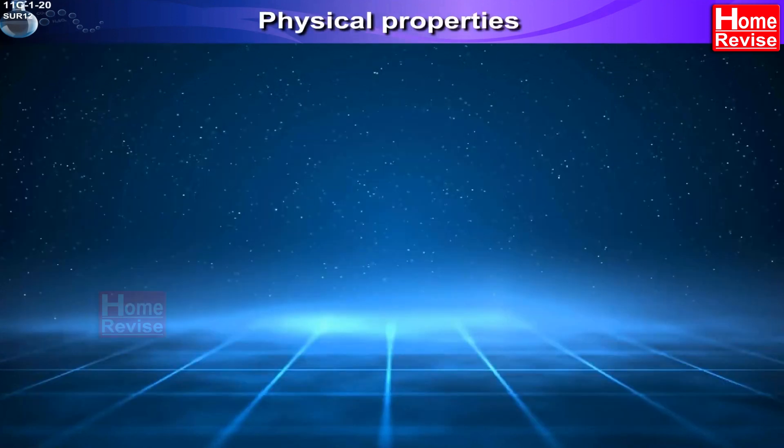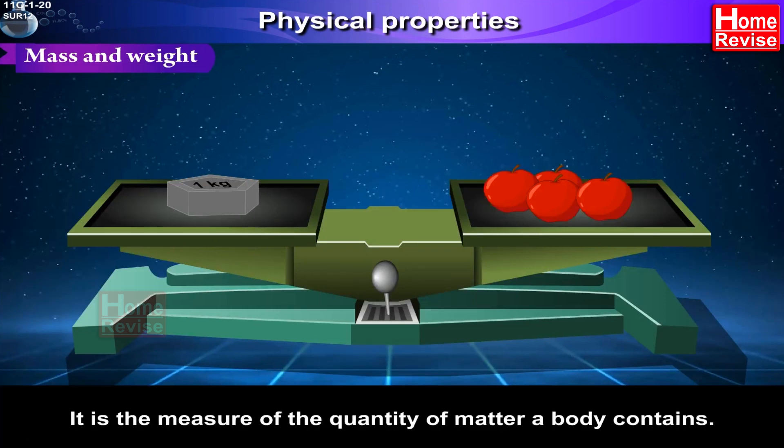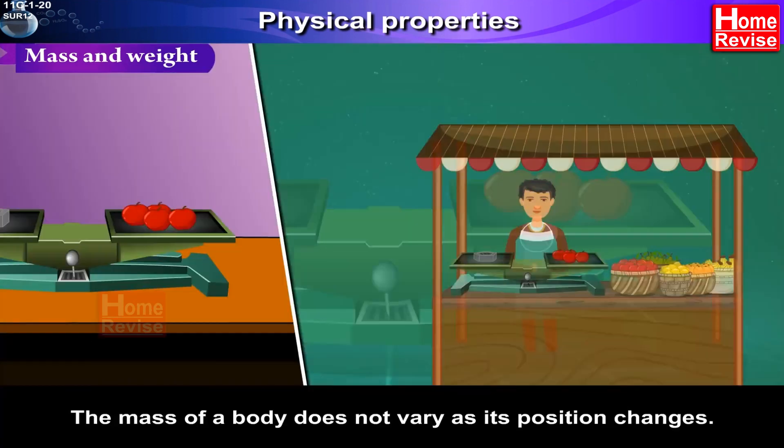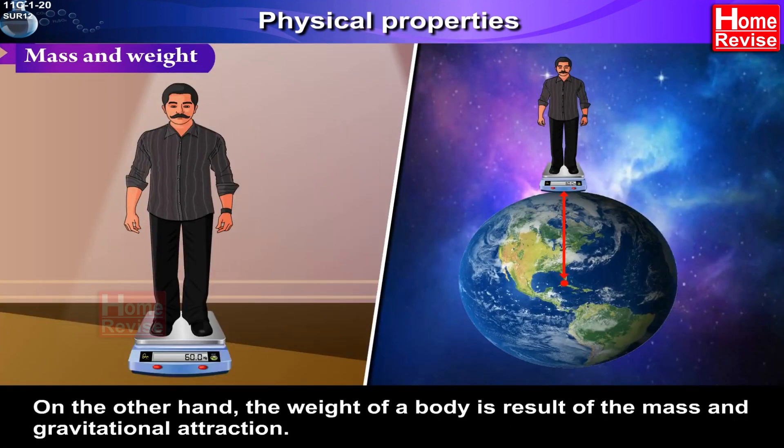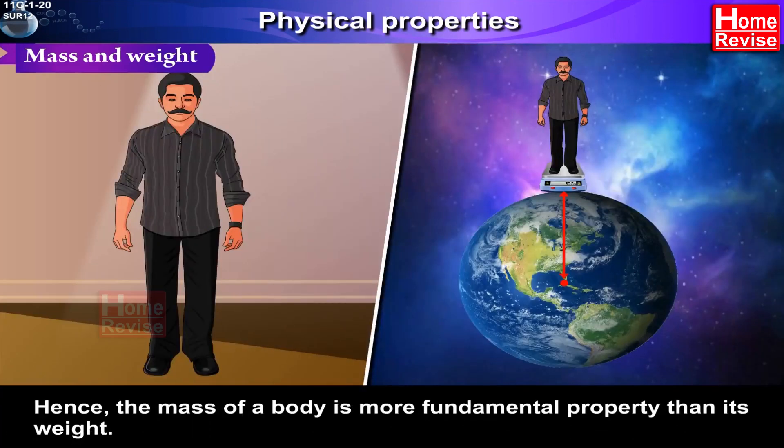Physical properties. Mass and weight. We know that matter has mass, so mass is an inherent property of matter. It is the measure of the quantity of matter a body contains. The mass of a body does not vary as its position changes. On the other hand, the weight of a body is result of the mass and gravitational attraction. The weight of a body varies because the gravitational attraction of the earth for a body varies with the distance from the center of the earth.